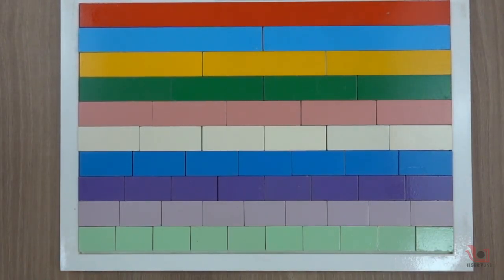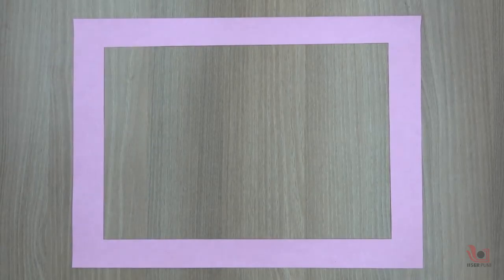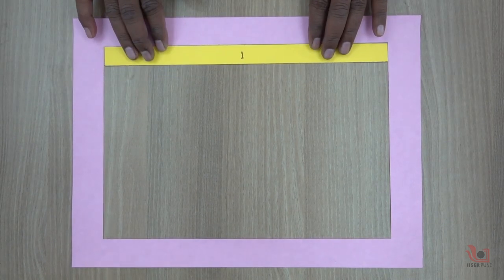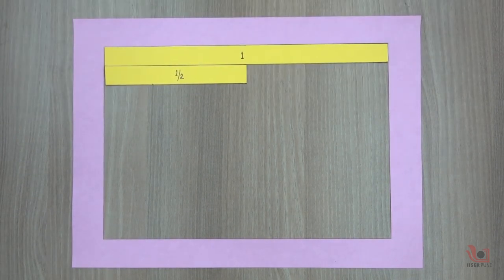You can also make these fraction strips using wood or any soft material like foam rubber sheet so that they can be easy to handle.